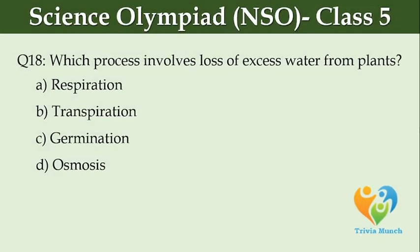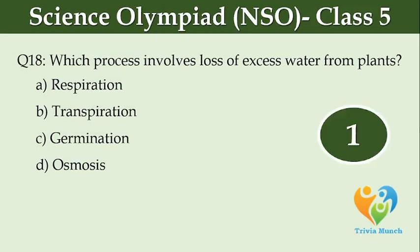Which process involves loss of excess water from plants? Option A: respiration, Option B: transpiration, Option C: germination, Option D: osmosis.